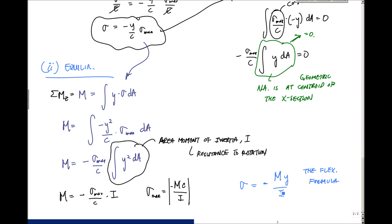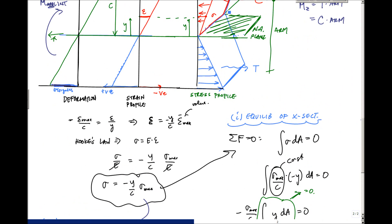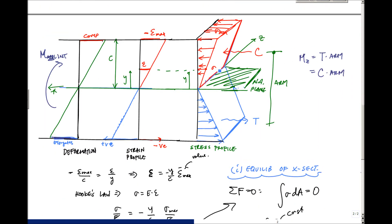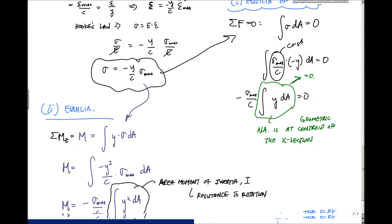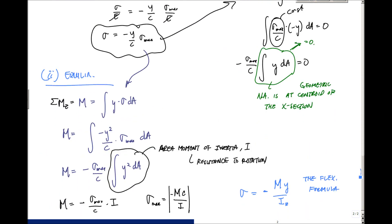This moment of inertia I is about the z-axis — meaning the horizontal axis of the cross section — computed about the centroid of the cross section. This is the flexure formula, one of the fundamental equations in an introductory mechanics course. We'll do some example problems next. Enjoy!